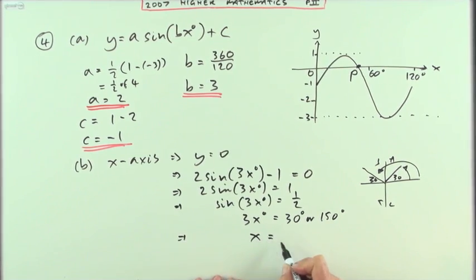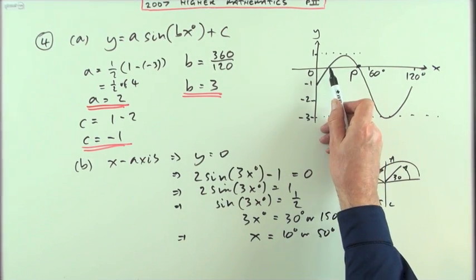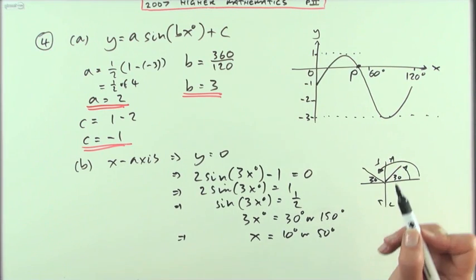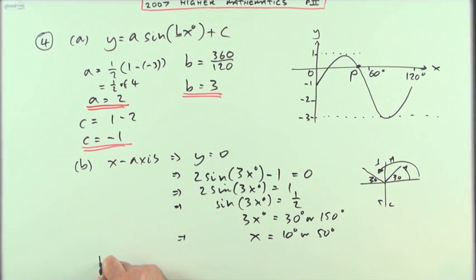Which means that x is going to be, dividing by 3, either 10 degrees or 50 degrees. And you can see from this, that must be the 10 and that's the 50. P is the second intersection, so I'll just put a note.